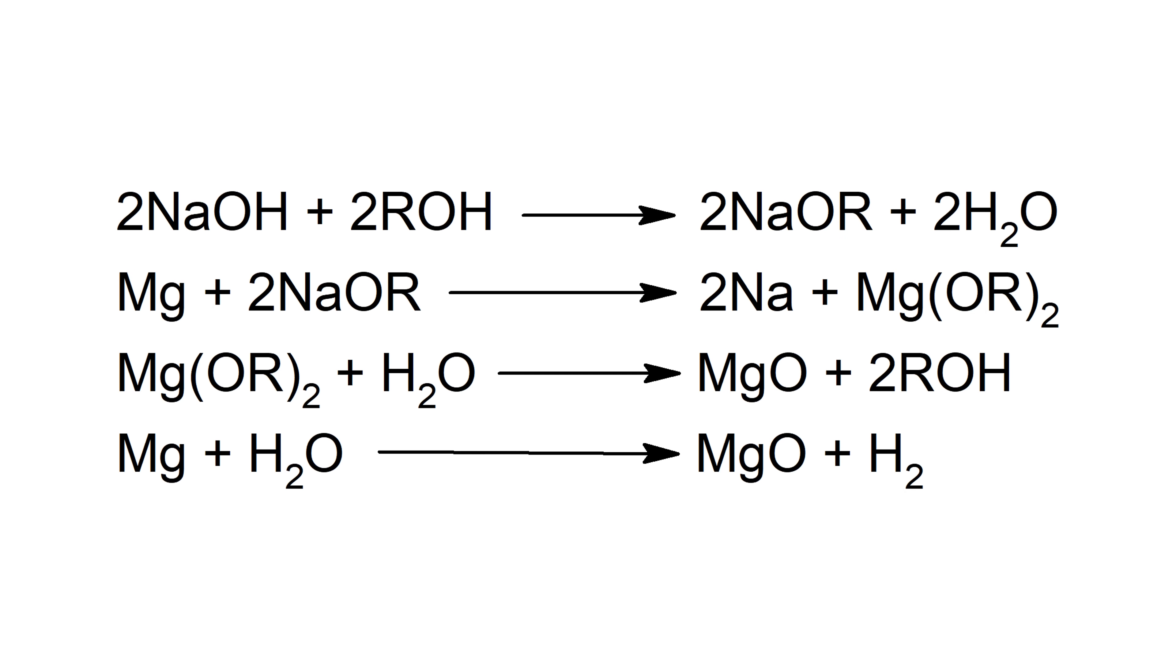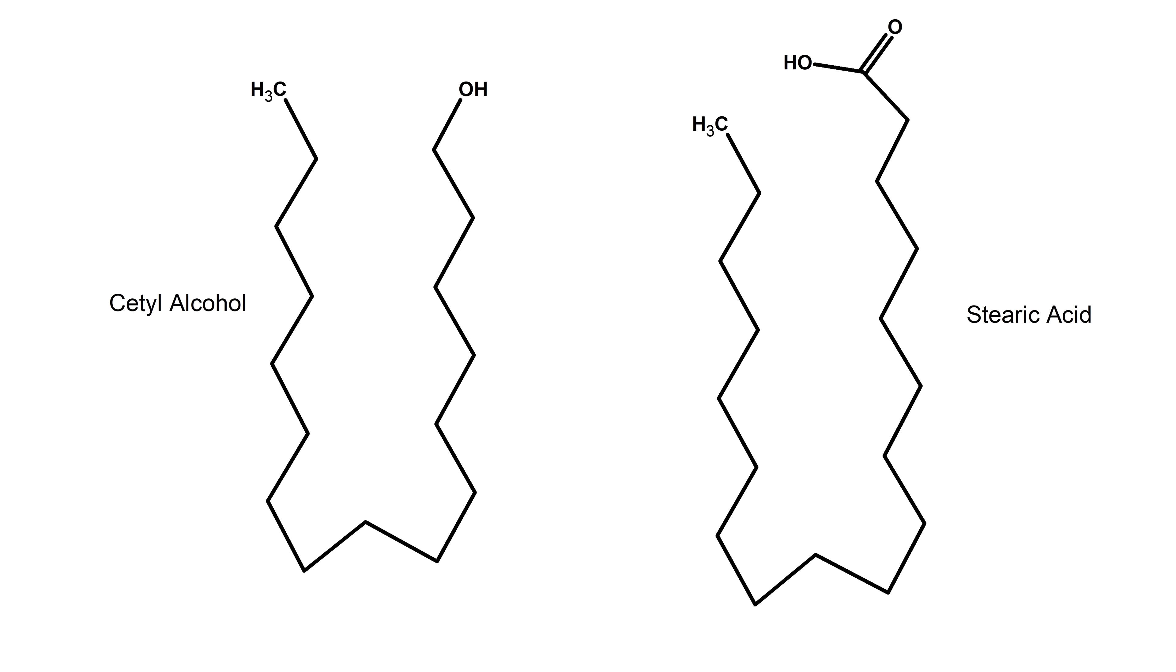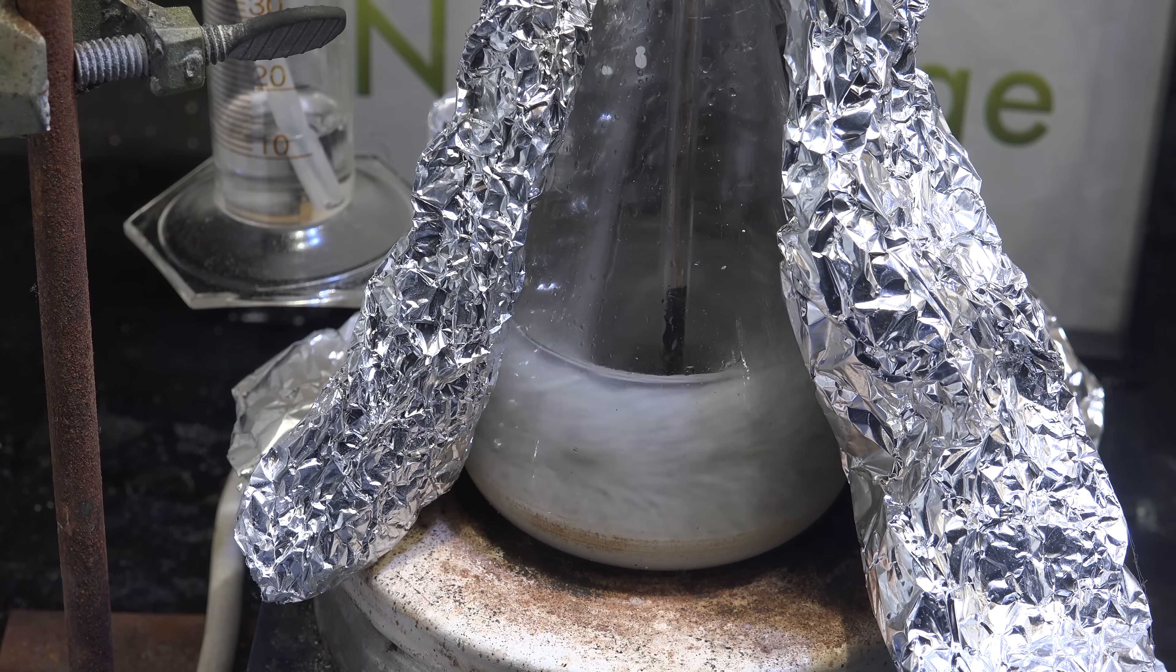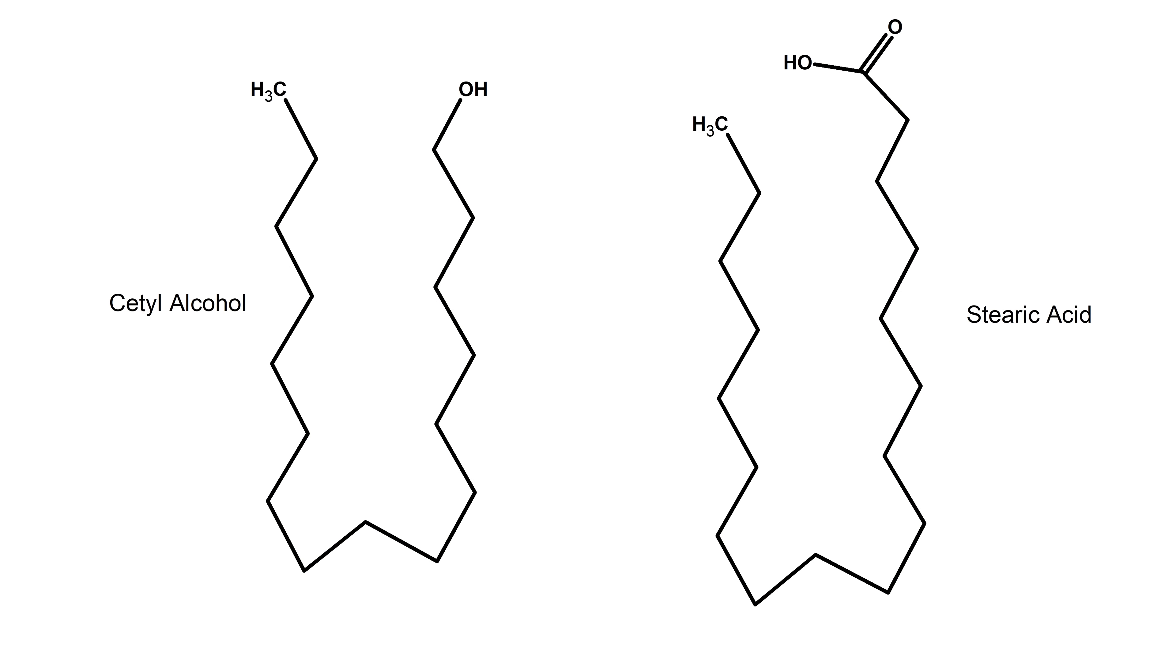Our current theory involves solvation of the various metal ions by the catalyst so a long enough chain should work. Long chain organic alkoxides tend to be more soluble than short chain alkoxides. We already tried 1-hexanol before and that didn't work but cetyl alcohol is huge at 16 carbon atoms long.